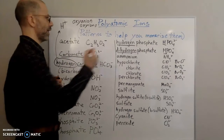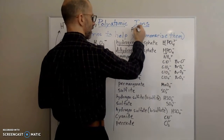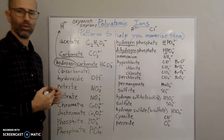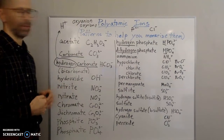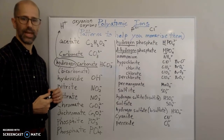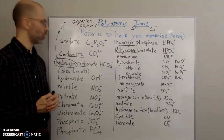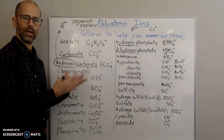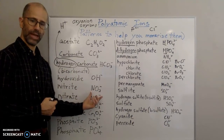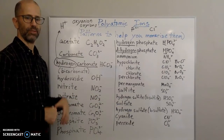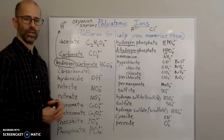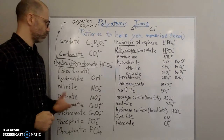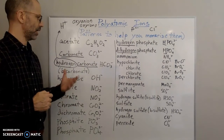For example, you had the phosphide ion with a 3- charge, or the chloride ion with a 1- charge — those are monatomic ions. The polyatomic ion, as the name suggests, has more than one atom. All of these are polyatomic because they have more than one atom, and the overall molecule has a charge. So instead of charged atoms, you have charged molecules — more than one atom bonded together.